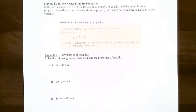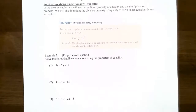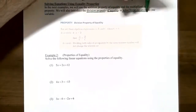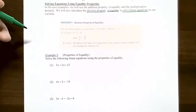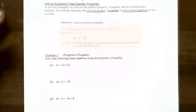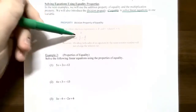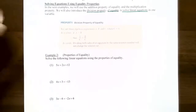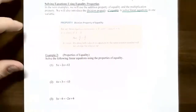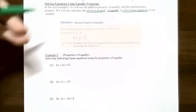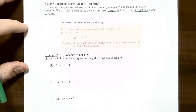Now we're going to solve equations using all four equality properties: addition, subtraction, multiplication, and division. The division property of equality states that if A, B, and C are algebraic expressions where C cannot be zero, and A equals B is the original equation, you are allowed to divide both sides by C. As long as you're not dividing by zero, you'll have an equivalent equation and the solution set will remain the same.